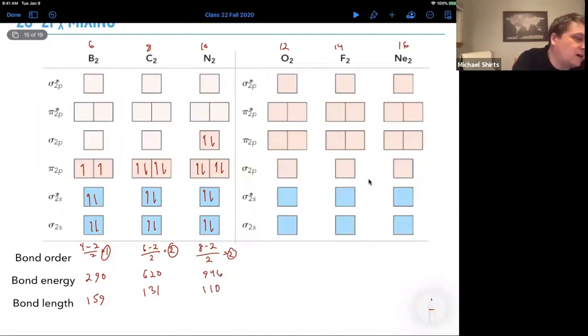Okay, so now let's move on to oxygen. So, we have 12 electrons, 1, 2, 3, 4, 5, 6, 7, 8. Note now that the order of the sigma 2p and the pi 2p is switched so that sigma 2p is higher in energy and then